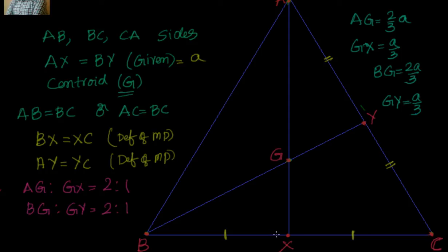If you look at AGY and BGX, we know that just now we have found that AG is nothing but equal to 2 by 3 into A and this part is A by 3. Similarly, I know this is 2 by 3 A and this is A by 3. Now can we go ahead and say AGY and BGX are congruent to each other? Yes, you are right. We can say that because vertically opposite angle will help us.